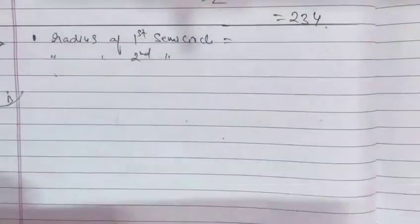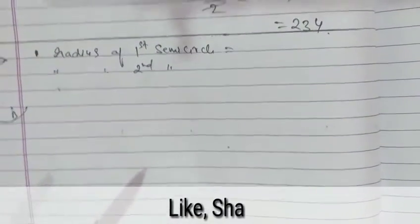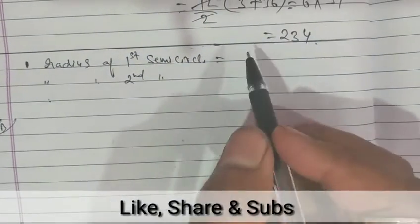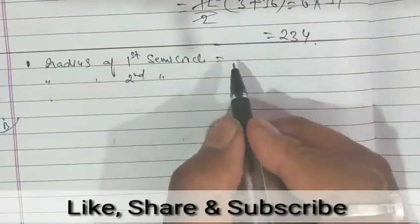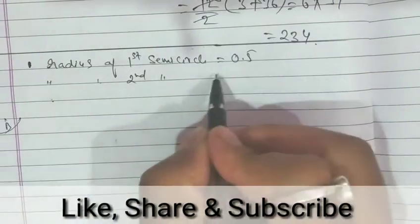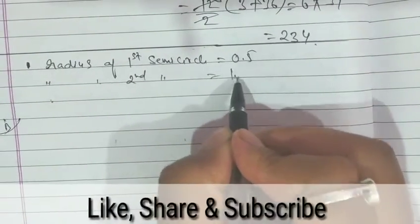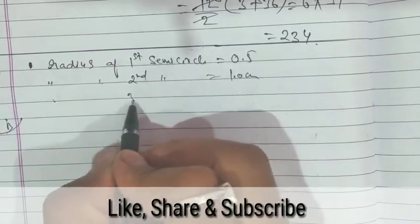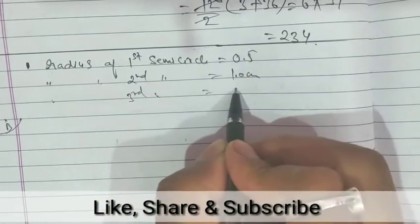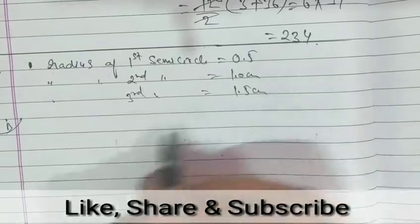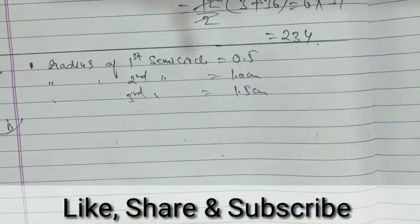Radius of first semicircle is given as 0.5, radius of second is given as 1 cm, and third is given as 1.5 cm, and so on.